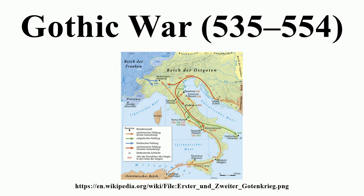Theodoric and the Goths were able to defeat Odoacer, and Italy came under Gothic rule. However, as per the arrangement between Theodoric, Zeno, and the latter's successor Anastasius, the administration continued in its old form and was staffed exclusively by Romans, and legislation remained the preserve of the Emperor. At the same time, the army remained the exclusive preserve of the Goths, who came under the authority of their own chiefs and courts.